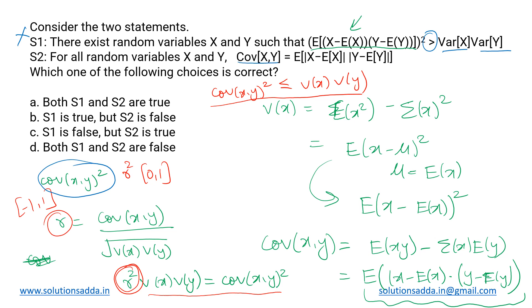Coming to Statement 2, it states that covariance of (X, Y) equals expectation of |X minus E(X)| times |Y minus E(Y)| using the modular symbol. This is not correct because the value of X minus expectation of X can be negative in some cases, and applying the modulus sign disturbs those cases. The correct formula uses simple multiplication without the modulus. Therefore, Statement 2 is also incorrect.